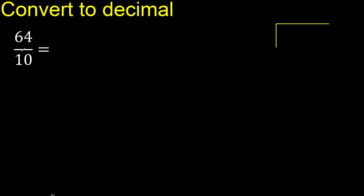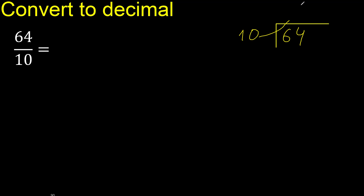64 divided by 10 — 10 multiplied by which number is nearest to 64 but not greater? Multiply by 7 is 70, 70 is greater. Multiply by 6 is 60, 60 is not greater. Ok, subtract — 64 minus 60 equals 4.